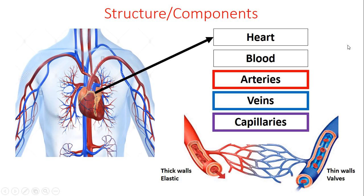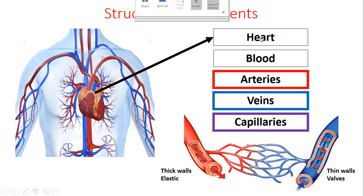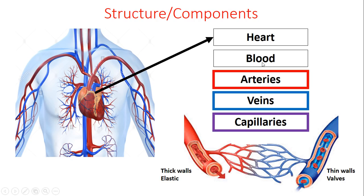Now when we talk about the cardiovascular system, we are talking about these main components. We've got our heart, which helps to pump blood around our body. We've got our blood, which helps to carry the oxygen, carbon dioxide, and nutrients around our body to where it's needed. And the things that carry it — like a road network — are what we call our arteries, veins, and capillaries. All of these components work together to make sure those functions happen.